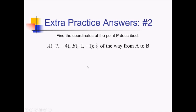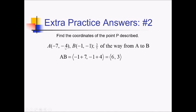For this problem, we want the point that is three-fifths of the way from point A to point B. Let's start by getting directions — a component form — to get from just point A to point B. So that would be negative 1 minus negative 7, or plus 7, comma, negative 1 plus 4, which gives us the component form 6, comma, 3. So now we have to take point A, negative 7, comma, negative 4, and add three-fifths of these directions.